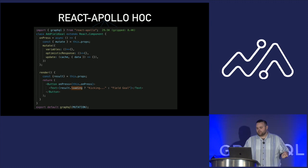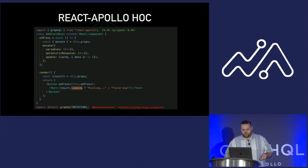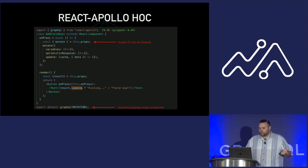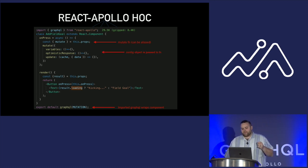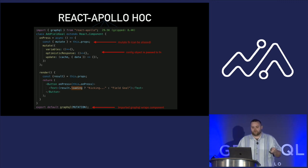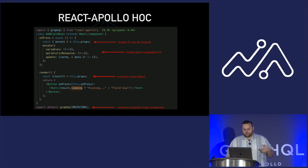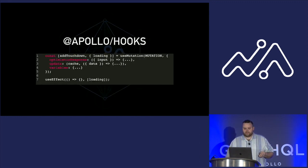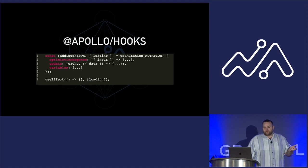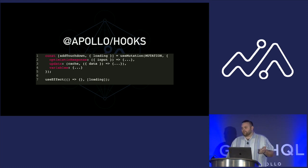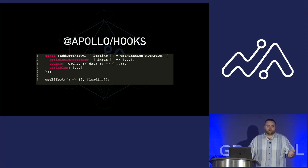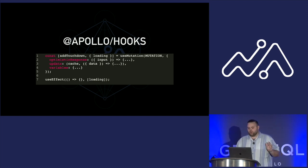This is the implementation using the old higher-order component. You import your GraphQL, wrap your component, mutate is imported. To add the optimistic response, you add it to the config object passed in as a parameter on the mutate function. The result is pumped in as a prop with your loading state. Hooks — if you guys haven't used them yet, I definitely recommend going home, putting your jammies on, typing npm install apollo-hooks. You're going to thank me in the morning. It's totally worth it.